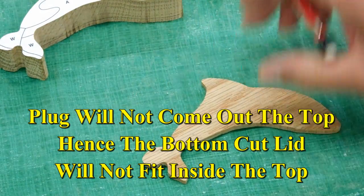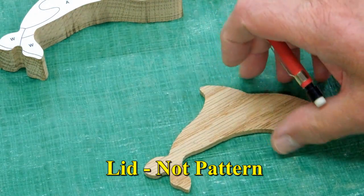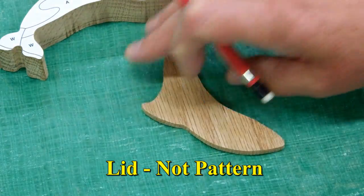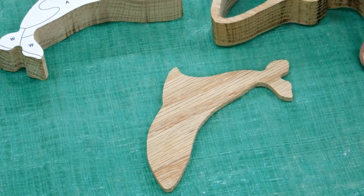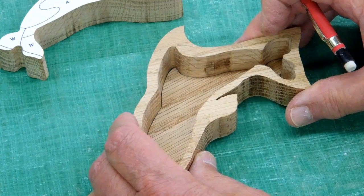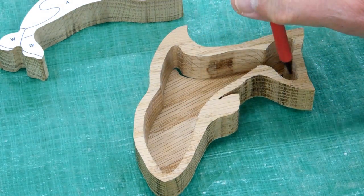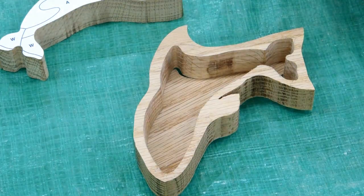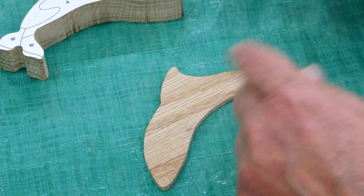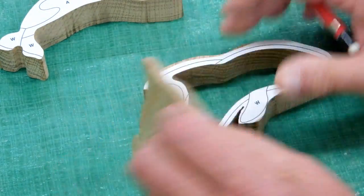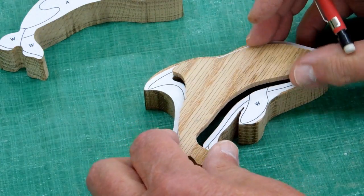So to fix that, I took this pattern, I turned it upside down, and I set this on top of it. And with a sharp mechanical pencil, traced all the way around the inside of the box. And I re-cut that on the scroll saw, and now that will go in.